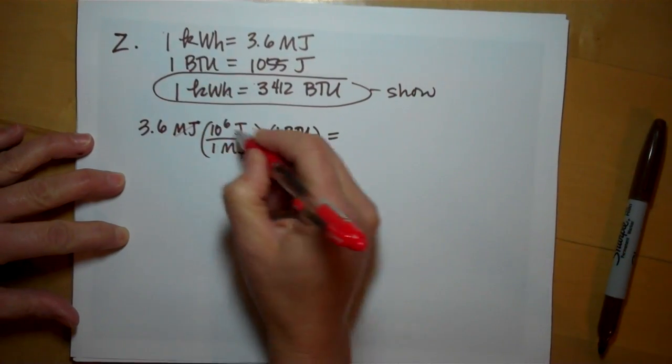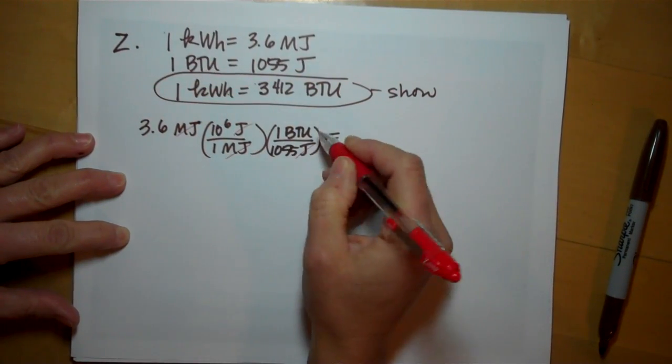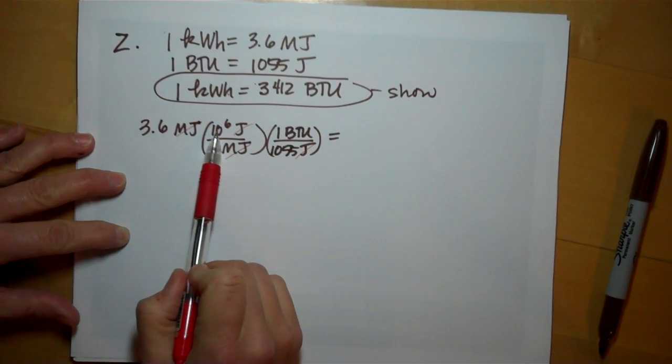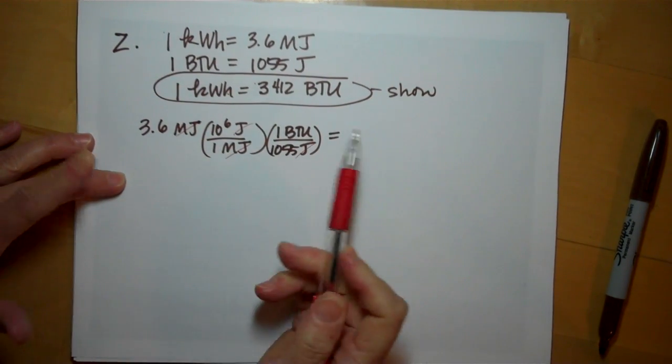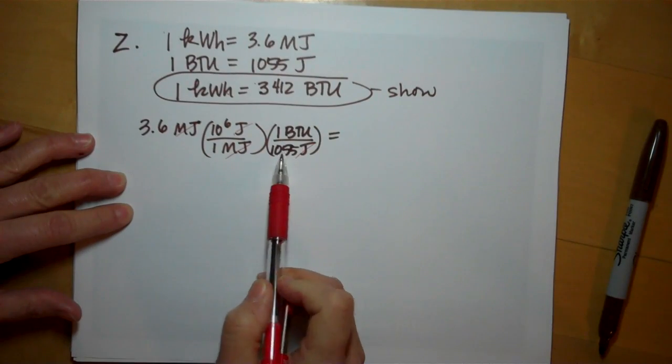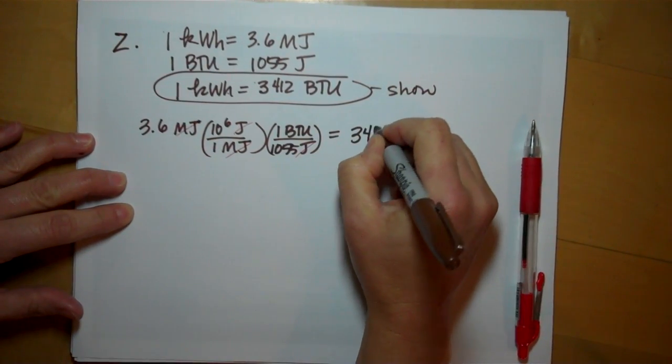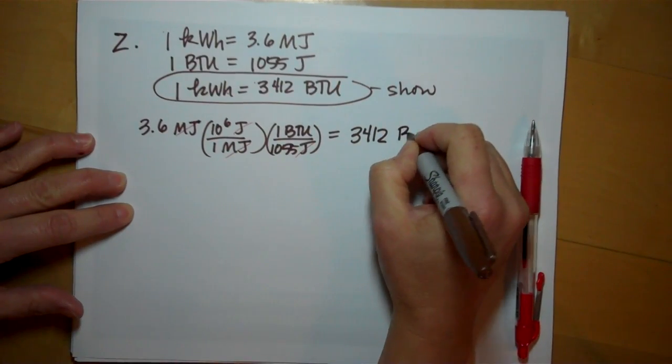So megajoules go away, joules go away. And multiplying 3.6 times 10 to the 6th, 3.6 million divided by 1055, we come out to 3,412 BTUs.